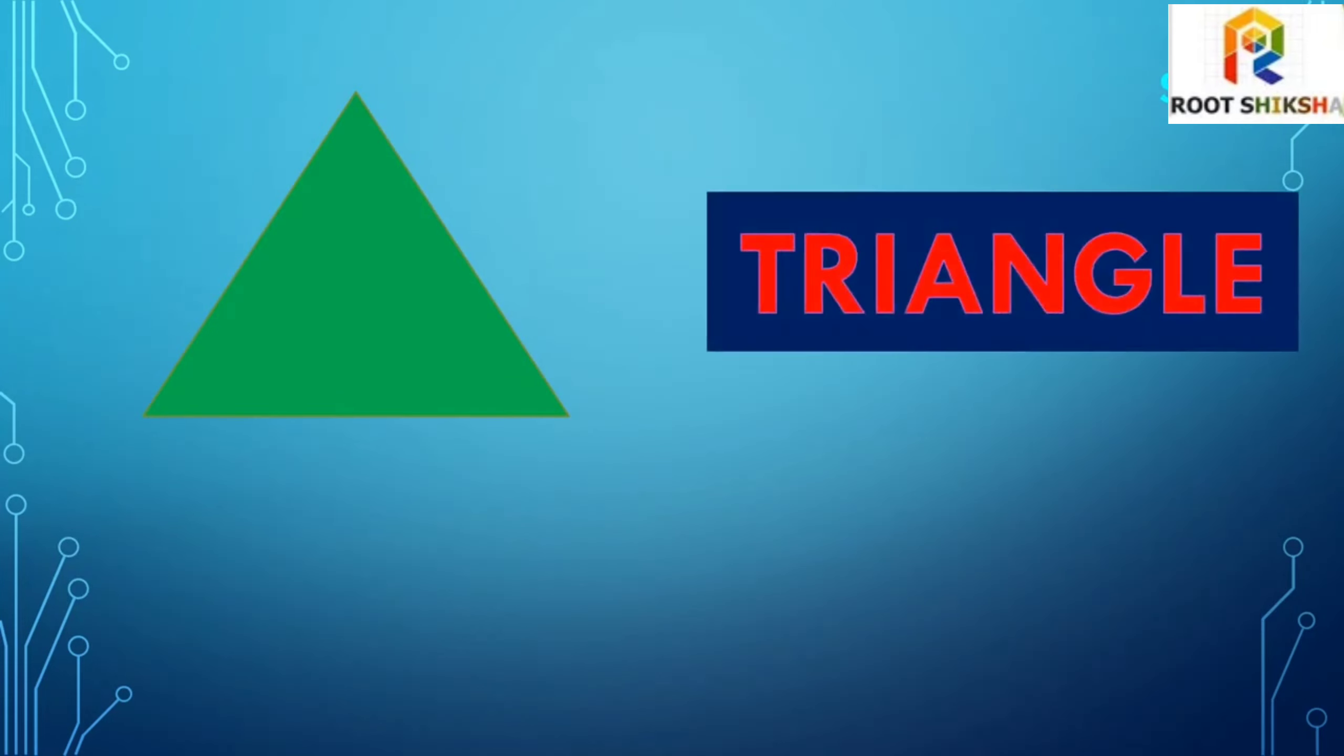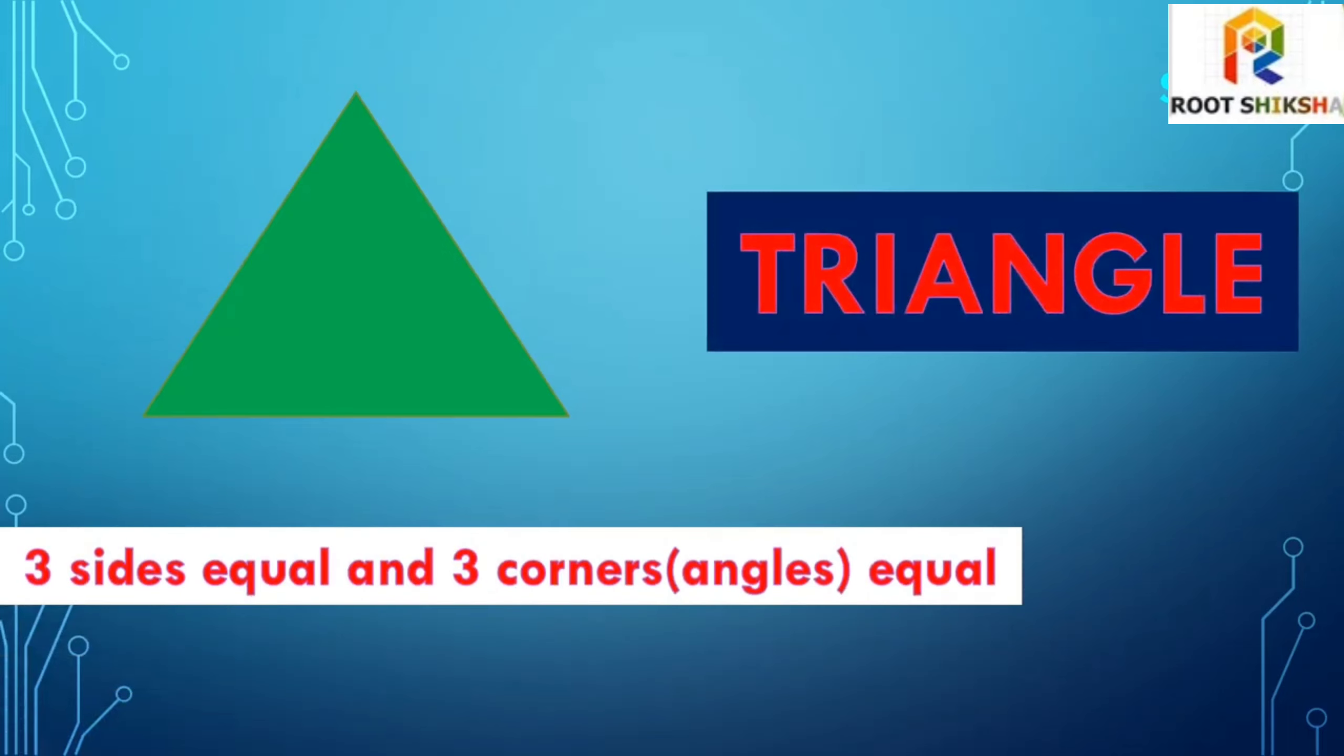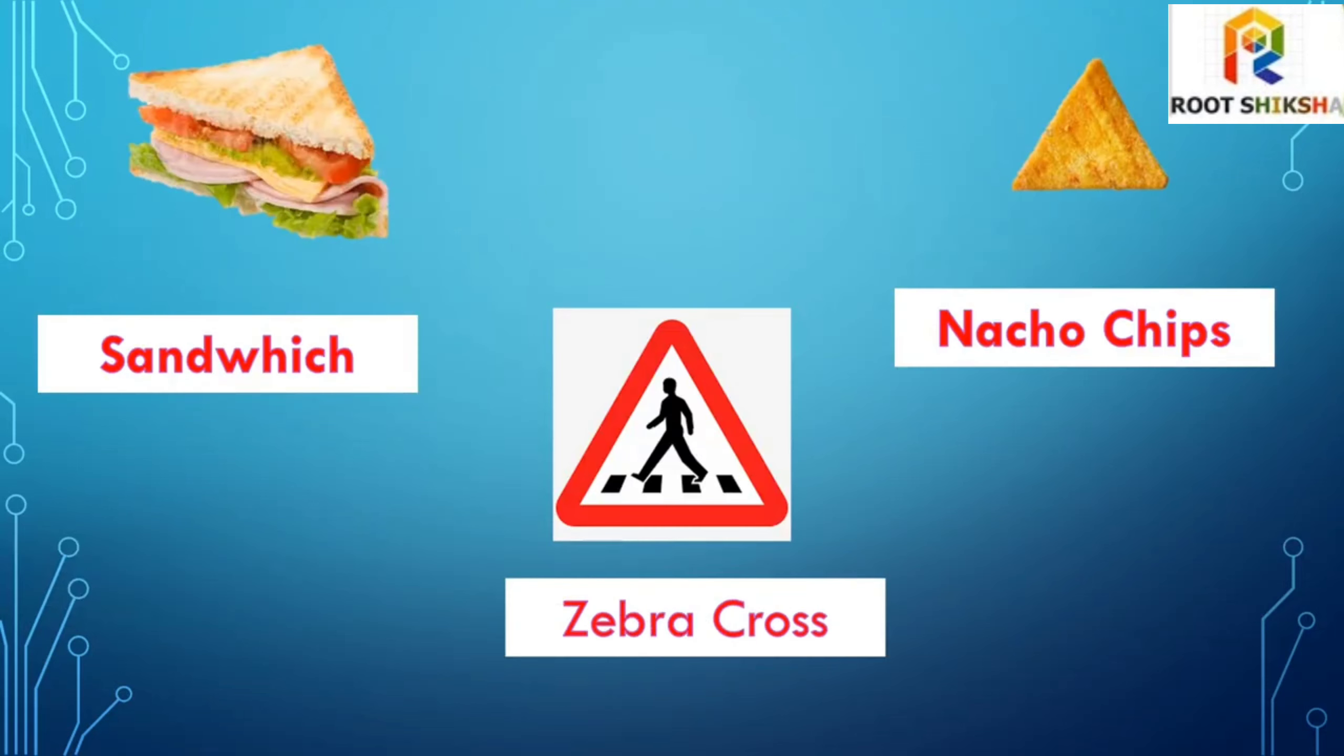Triangle. Three sides and three corners equal for triangle. For example: sandwich, natural chips.